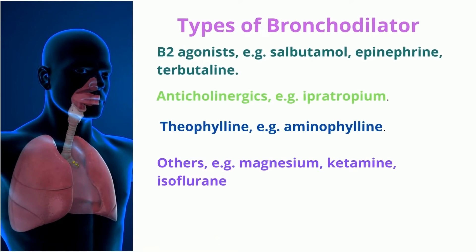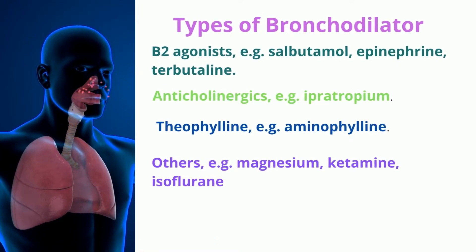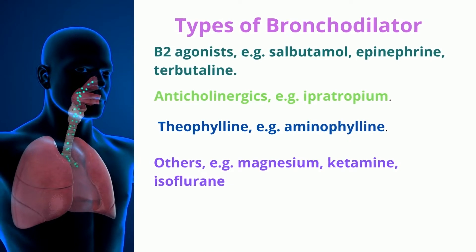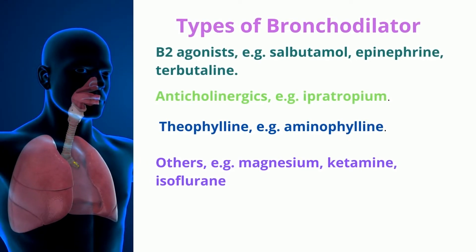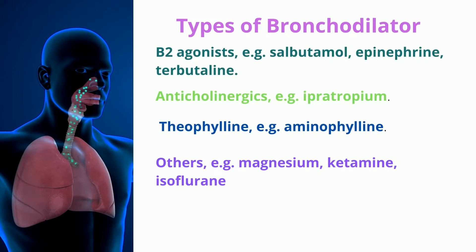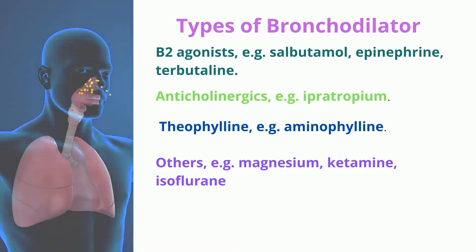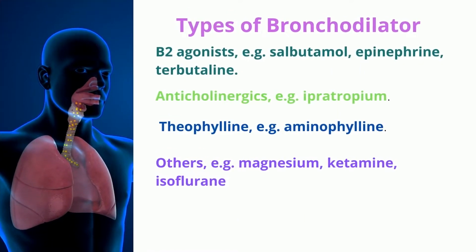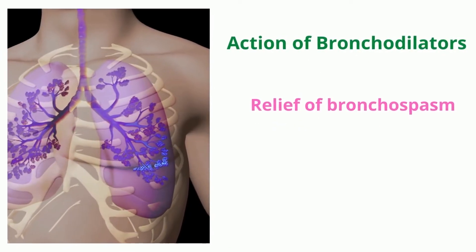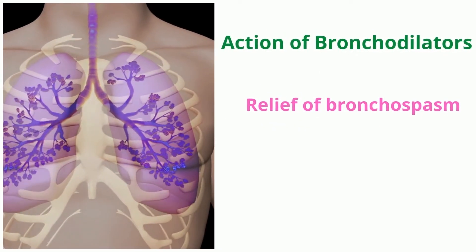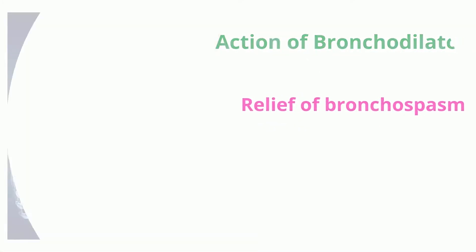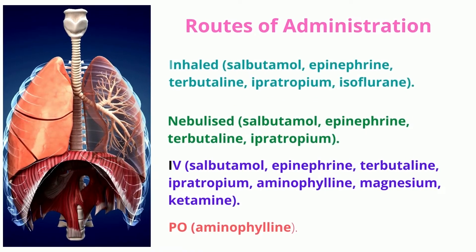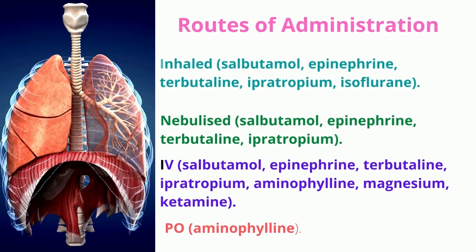Types of bronchodilators include B2 agonists such as salbutamol, epinephrine, and terbutaline; anticholinergics such as ipratropium; theophylline; aminophylline; and others including magnesium, ketamine, and isoflurane. Their primary action is relief of bronchospasm.